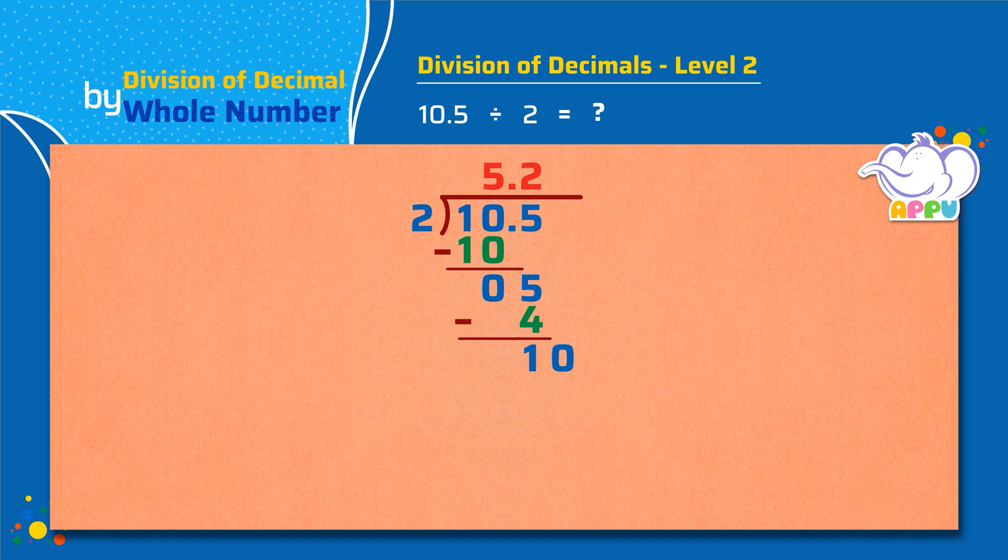2 divides 10 5 times, and 0 is the remainder. The answer is 5.25. So 10.5 by 2 equals 5.25. Superb.